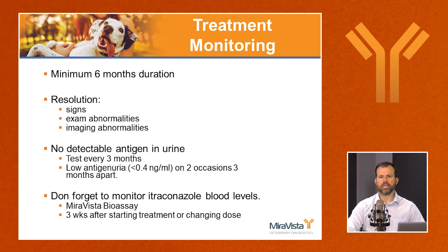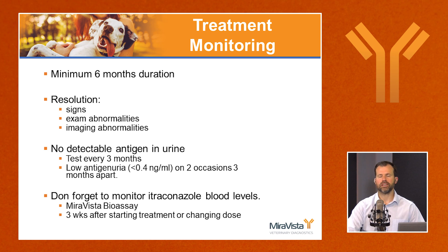In cats, we want the antigen test to become negative, and this usually also happens in dogs at remission. About 5% of dogs may remain at a low antigen-positive level; in those cases, if the urine antigen concentration is less than 0.4 nanograms per mL on two occasions at least three months apart, and all other criteria are met, stopping treatment can be considered. Antigen should generally be checked at baseline and then every three months during treatment.